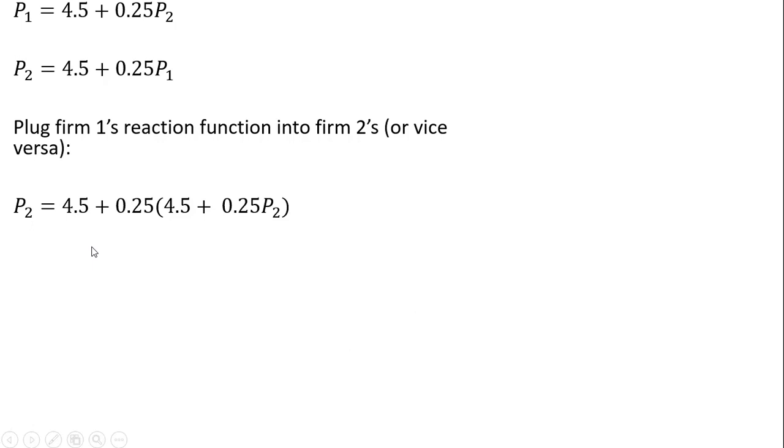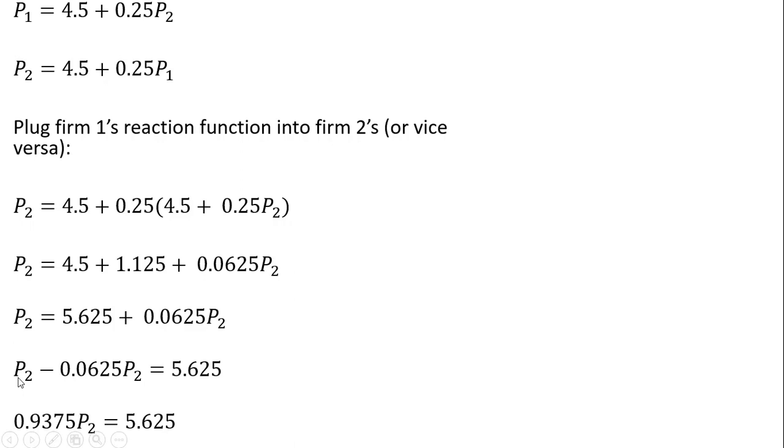Now we've got one equation and one unknown, so it's just a matter of simplifying it. 0.25 times 4.5 gives us 1.125. 0.25 times 0.25 P subscript 2 gives us this. Adding some things up on the right-hand side. Now subtracting this 0.0625 P subscript 2 from both sides. Simplifying the left-hand side. And then a little division here, dividing everything through by 0.9375. Firm 2 should charge a price of $6. Taking this $6 and plugging it into firm 1's reaction function, firm 1 will charge a price of $6. So this is our equilibrium. The equilibrium price is that each firm charges the same price.